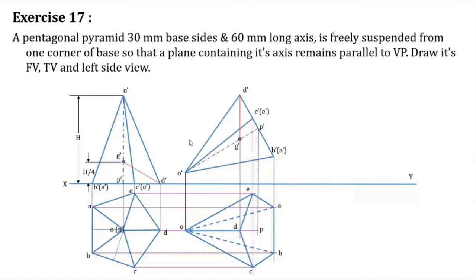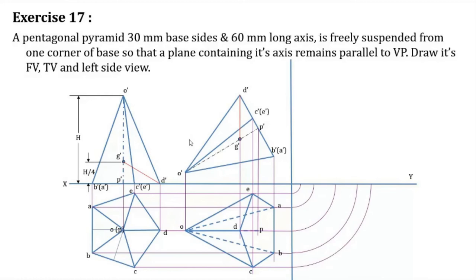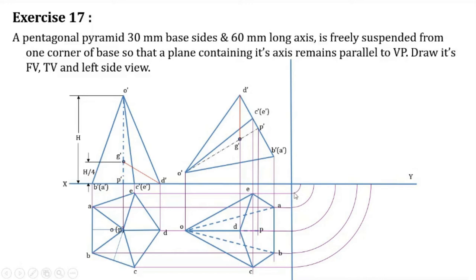Then go for the left side view. Since we are drawing the front view towards the right, the side view also has to be drawn. Draw the X1Y1 line. We draw semicircular arcs with the center at this point, and with each point's distance from the center as the radius. We draw arcs for each point.